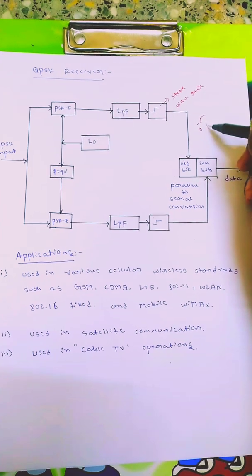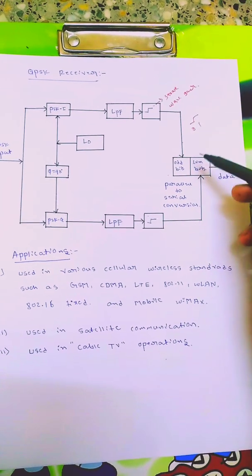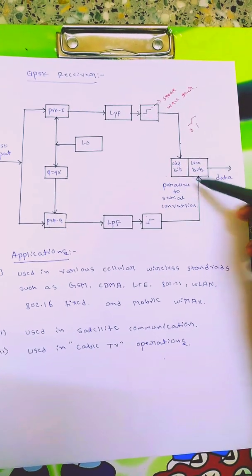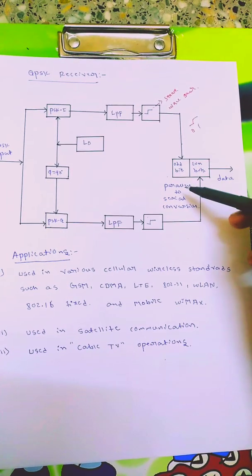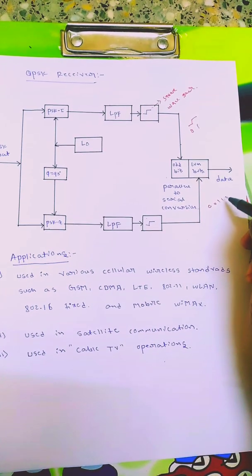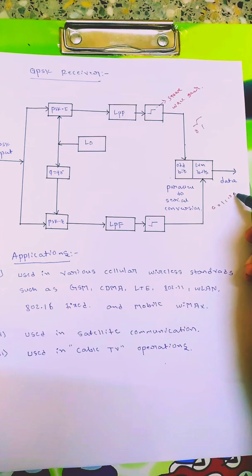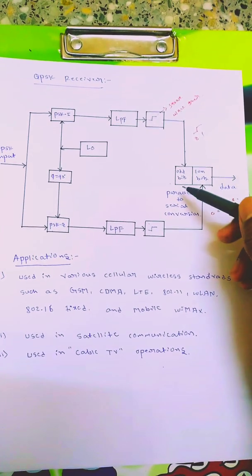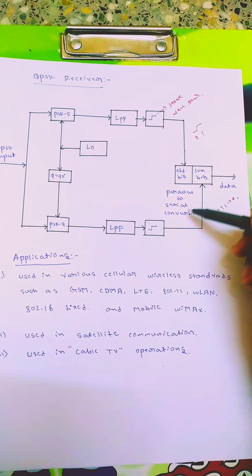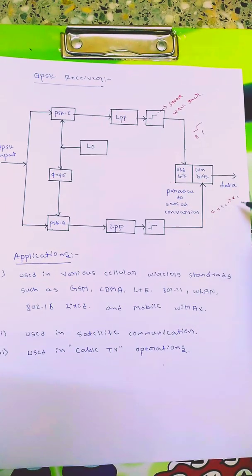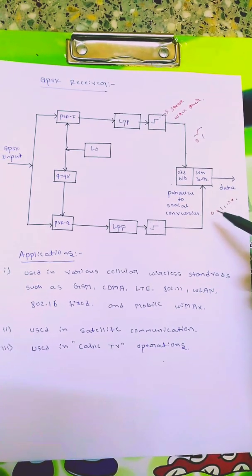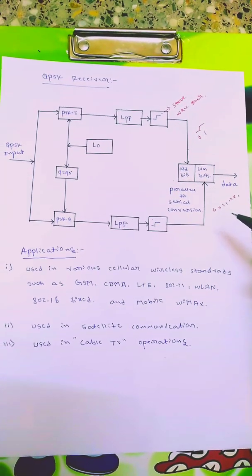This will generate square waves, meaning it will digitalize the data, either 0 or 1. So a 01 stream is coming from here and 01 stream from here. Odd bits are given here, even bits here. Then parallel to serial communication. To get our real data 001110101, we convert this parallel data back to serial data. Like this we get the same sequence or same data which was transmitted at the transmitter side.